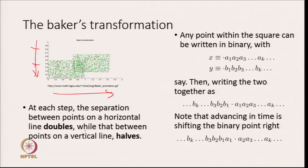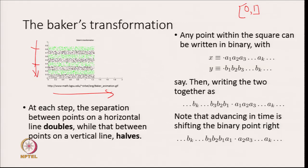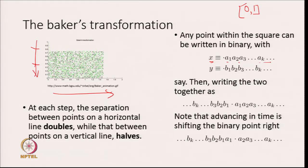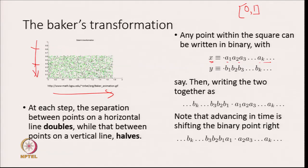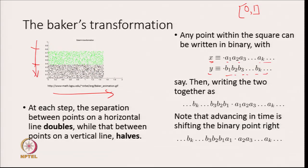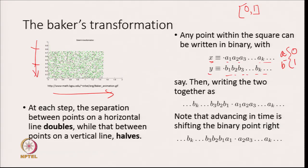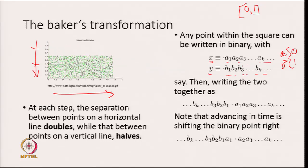We can do much more with this particular map. Any point in [0,1] can be written in binary expansion: if I write the x coordinate as a sequence a1, a2, a3, ... and the y coordinate as b1, b2, b3, ... also in binary, where all the a's and b's are 0 or 1, this gives a unique index of each point (x, y).